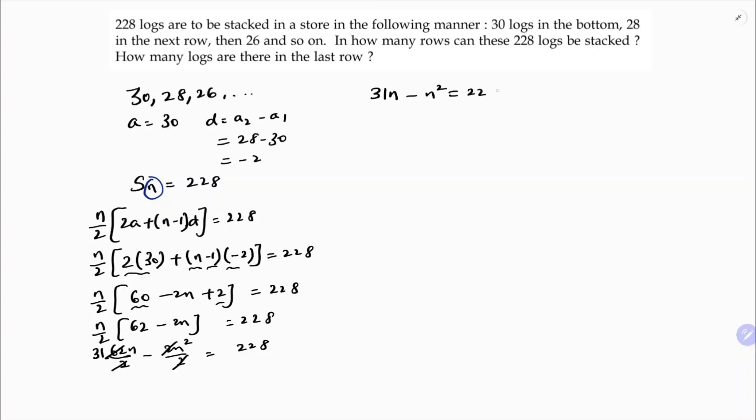See this is not in a standard form, so I'll transpose these two values towards right side. So I'll get n² minus 31n plus 228 equals 0. Now here the coefficient of n² is 1.